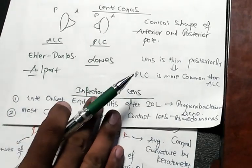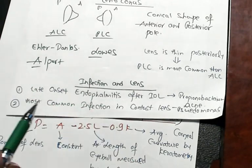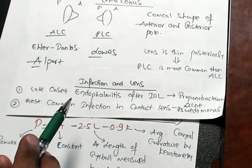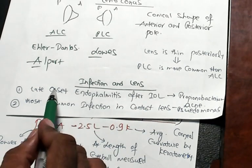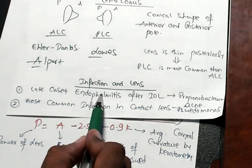Now two points about infection and the lens you have to be very sure. After you have put an intraocular lens, there is a late onset endophthalmitis.